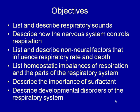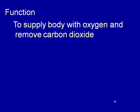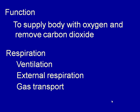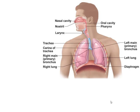The function of the respiratory system is straightforward: to supply the body with oxygen and to remove carbon dioxide. There are four processes involved in respiration — ventilation, external respiration, gas transport, and internal respiration — and we'll talk about these a little later. Let's start by looking at the parts of the respiratory system.